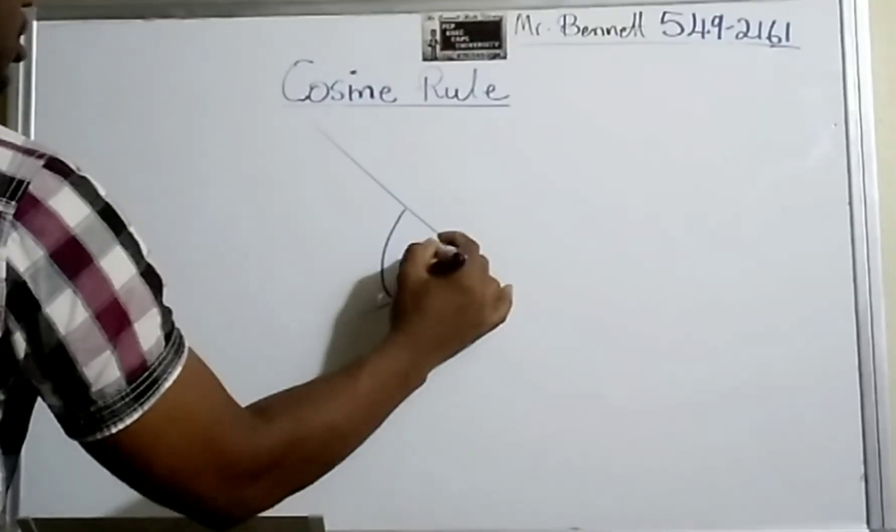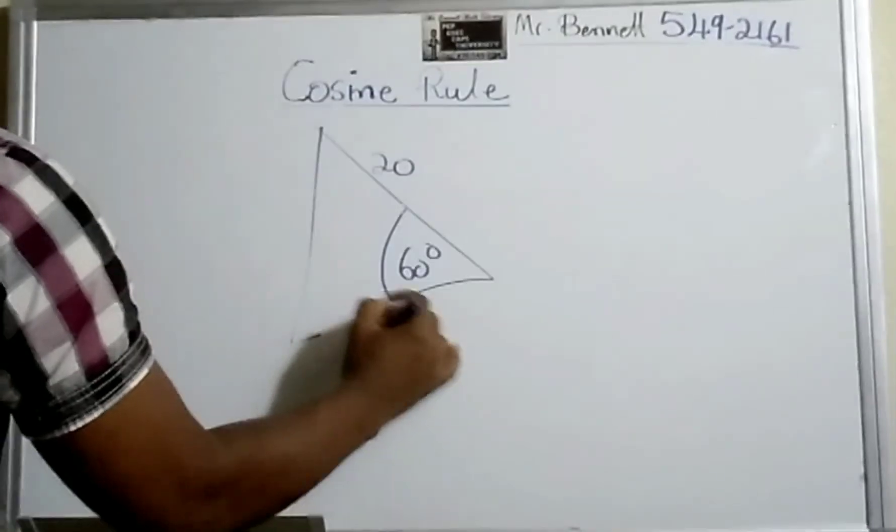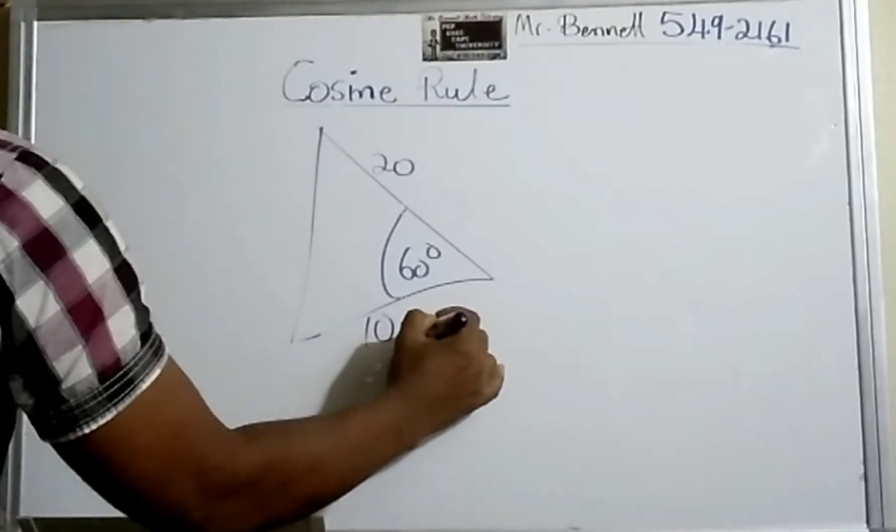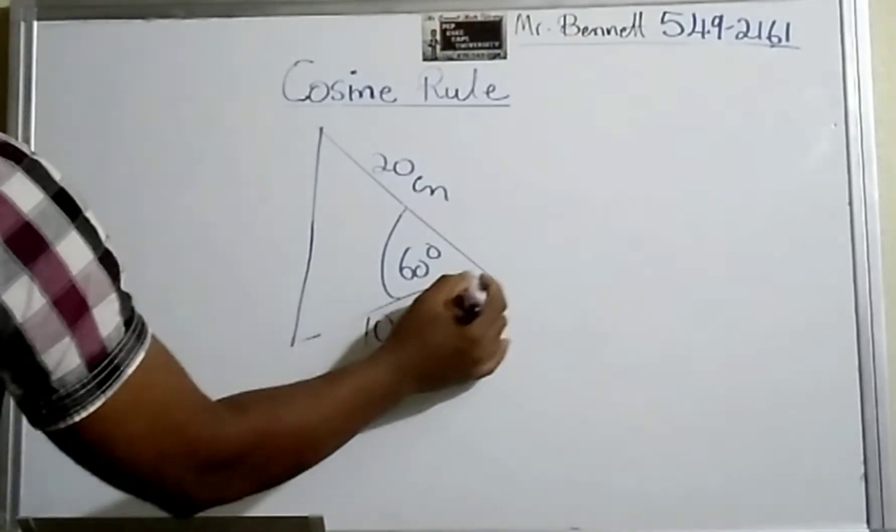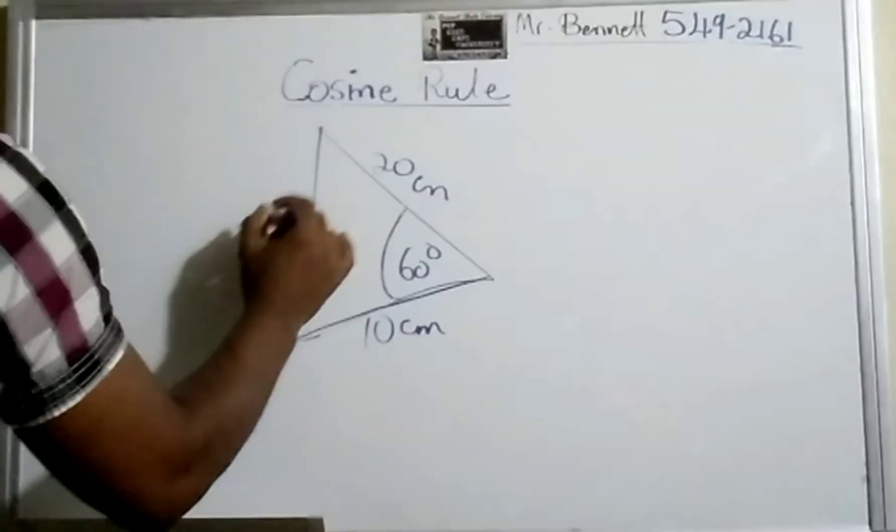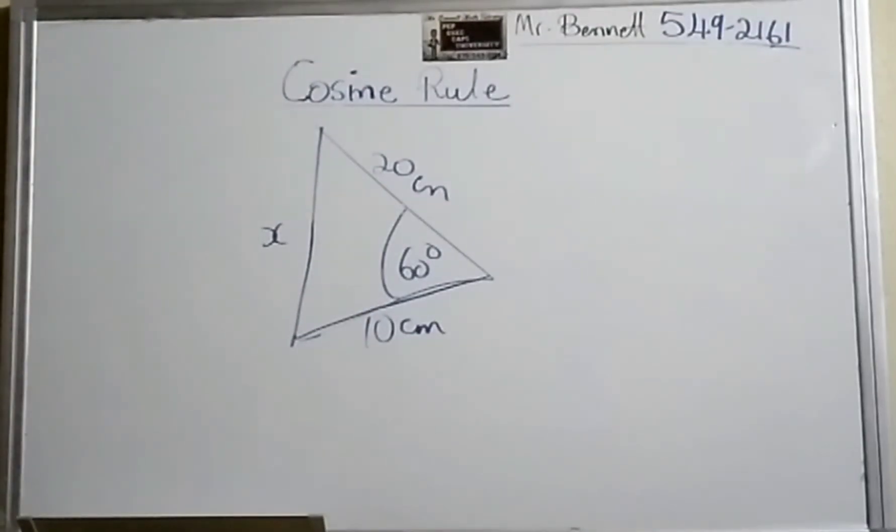So let us see. This is 60 degrees, this is 20, and this is 10 centimeters. We are asked to find this side. Let us call it x.